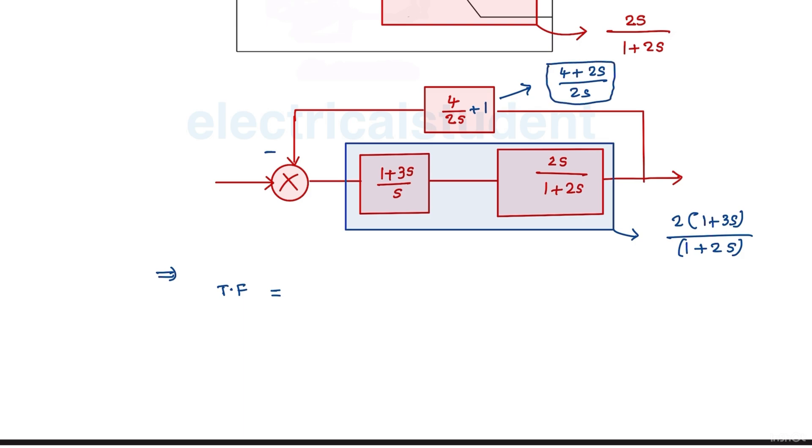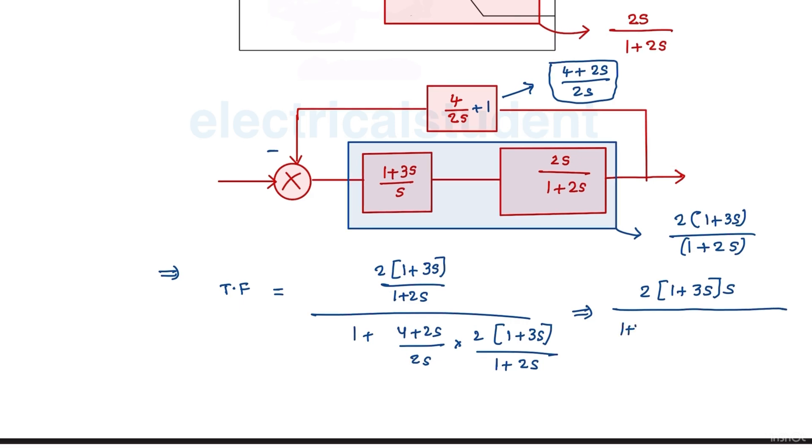This is an equivalent block of this one. So if you substitute the same thing in standard formula of g over 1 plus gh, it is 1 plus 2s, 4 times 4 plus 2s over 2s, multiplied 2 times 1 plus 3s, 1 plus 2s.